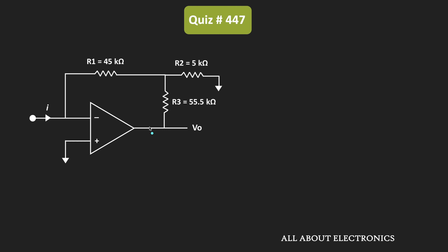The given op-amp is an ideal op-amp, and because of the negative feedback, we can apply the concept of virtual ground. Since the non-inverting terminal of the op-amp is at ground potential, we can say that V- is also equal to 0 — meaning this node is also at ground potential.